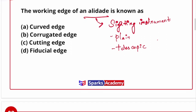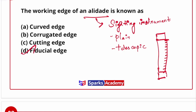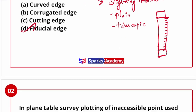The working edge of Alidade — Alidade looks like this: one side is the object end, one side is the eye end. There are graduations on the sides, and we use a scale. One side is the working edge, also called the ruling edge. The working edge is the fiducial edge.